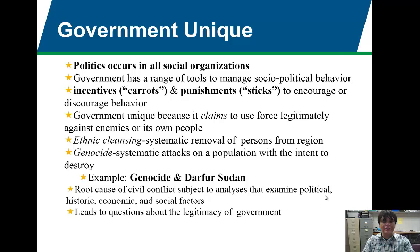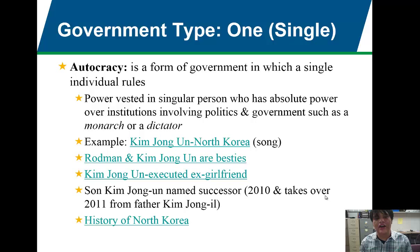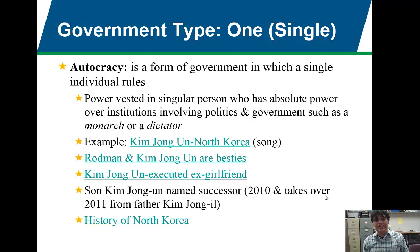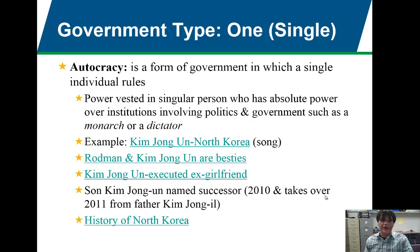Let's go ahead and look at the world at large and different government types. Before we can study the specific type of government we have here in Texas — a representative or Republican democracy — let's look at the world at large and narrow it down to Texas later this semester. Governments are often broken down in terms of the number of rulers they have. Some countries only have one ruler, some have a few, and other countries like democracies have a lot of people involved in government.